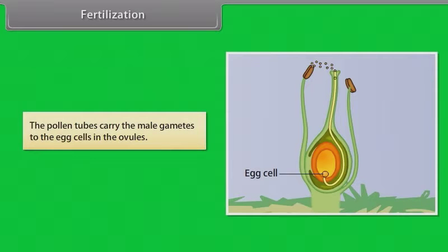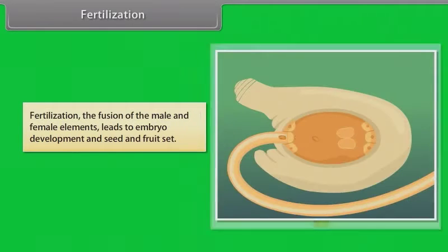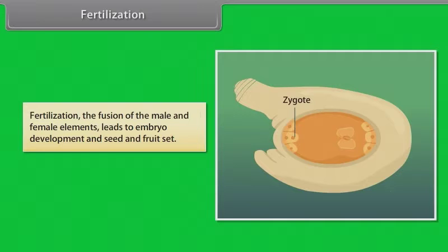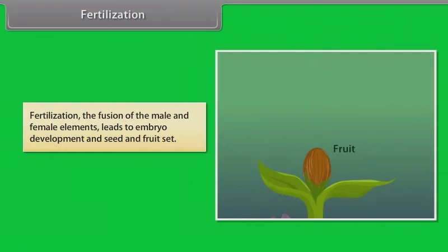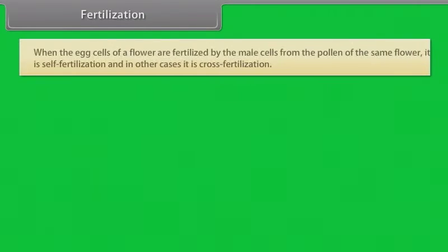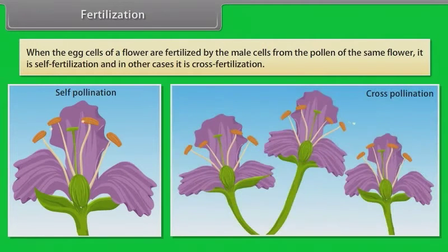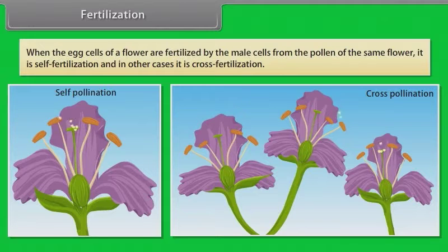Fertilization: the pollen tubes carry the male gametes to the egg cells in the ovules. The fusion of the male and female elements leads to embryo development and seed and fruit set. When the egg cells of a flower are fertilized by the male cells from a pollen of the same flower, it is self-fertilization; in other cases it is cross-fertilization.